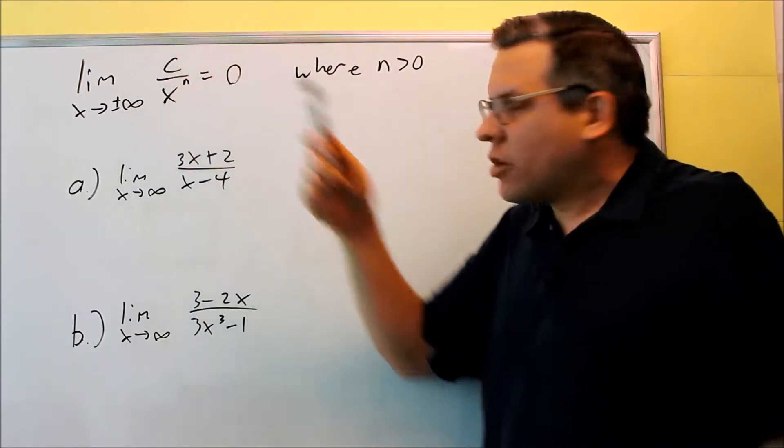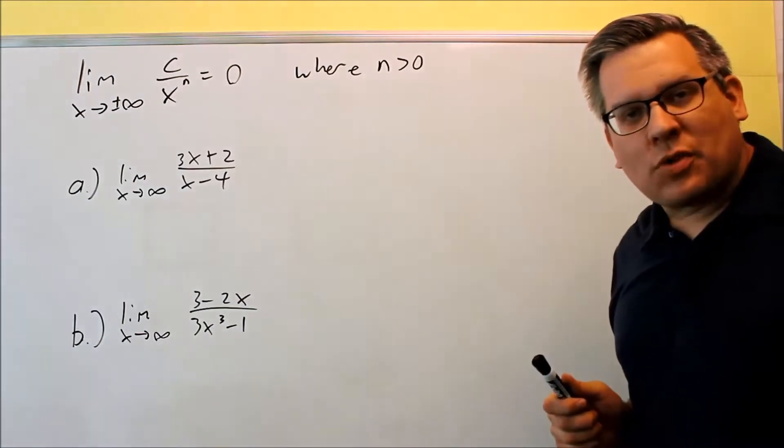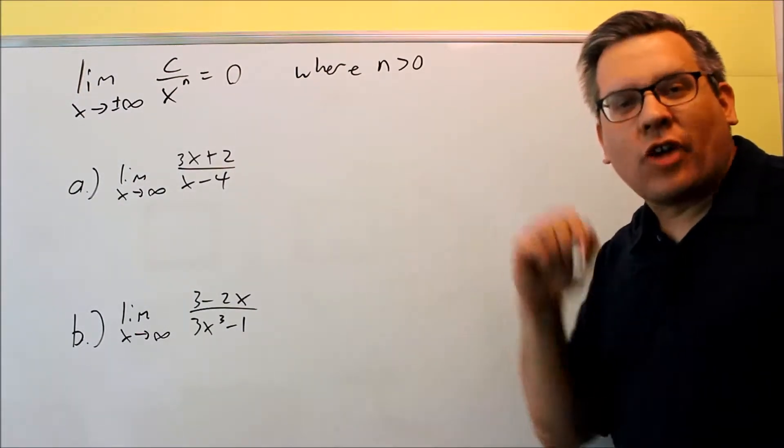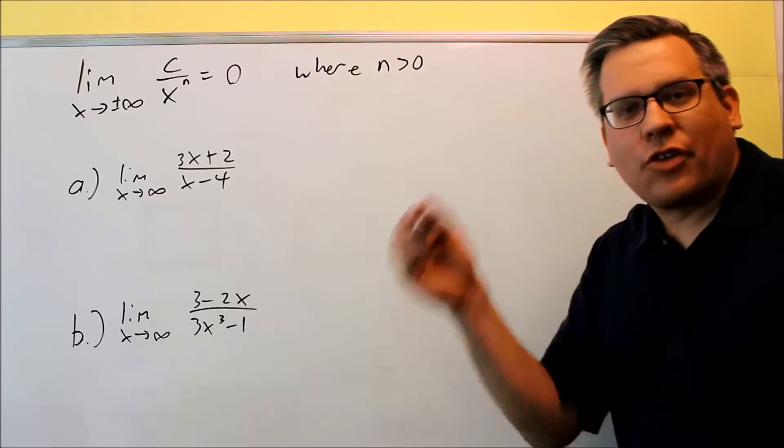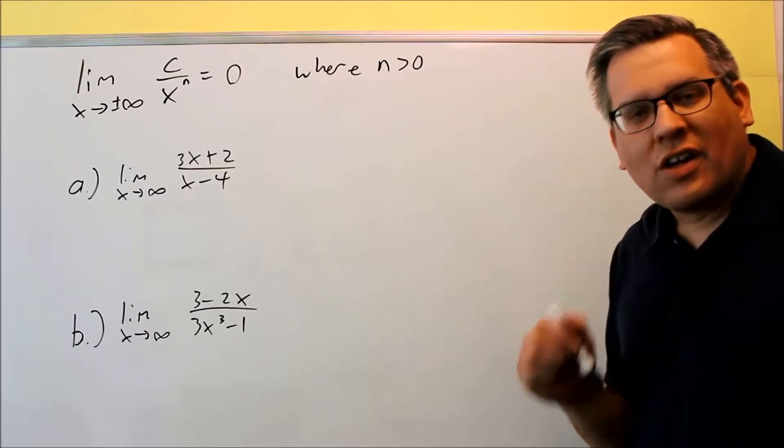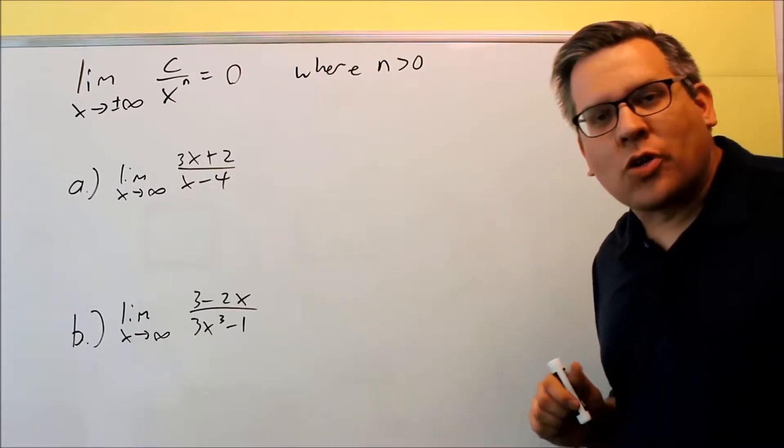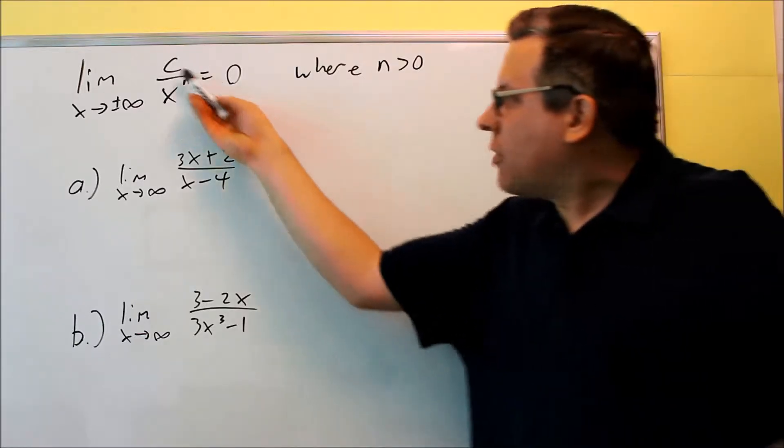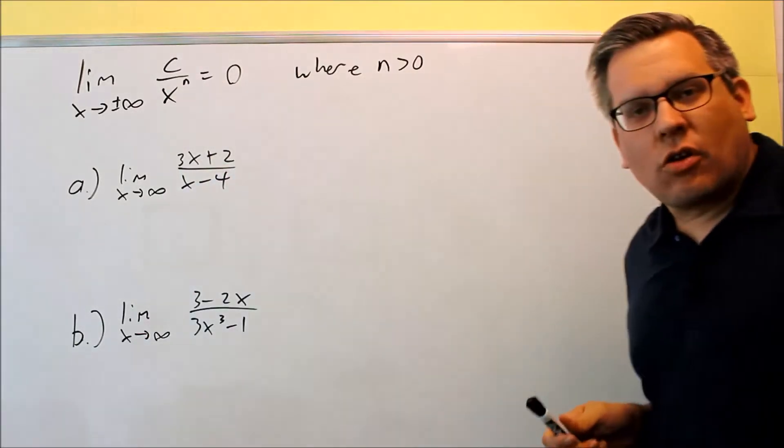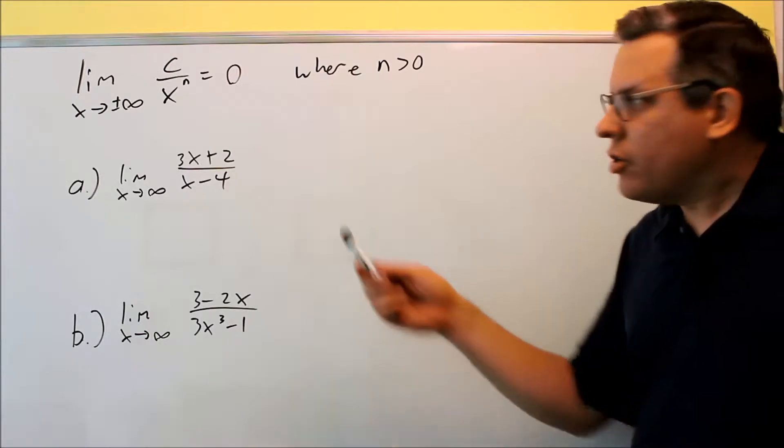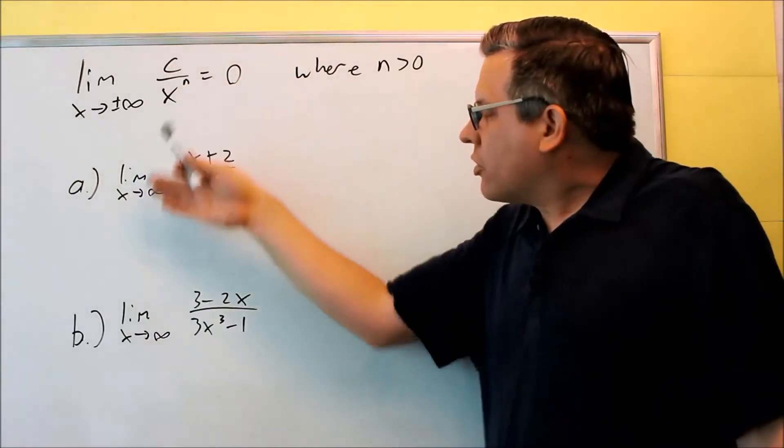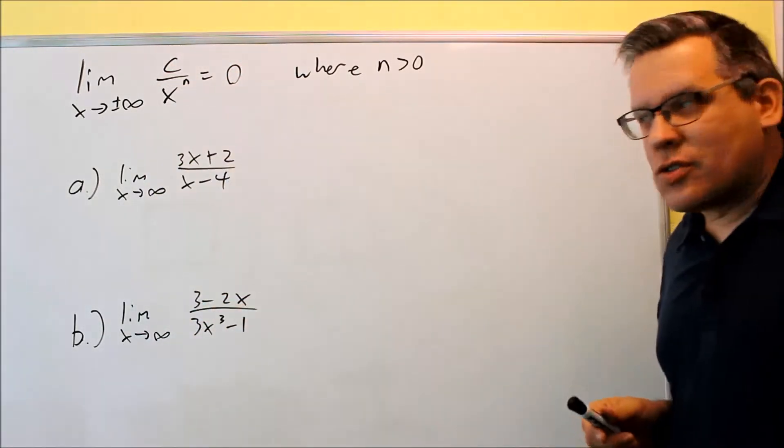What happens is this is going to go to zero. Now the reason why that happens is because if you try doing numbers in your calculator, 5 divided by 10, 5 divided by 100, 5 divided by 1,000, and so forth, that number itself is going to get smaller and smaller. So the larger the bottom is, that means that eventually the whole thing is going to go to zero. Now we're going to use this property in order to answer these two questions here.